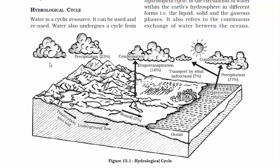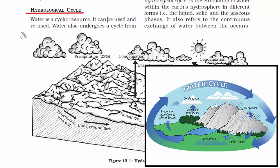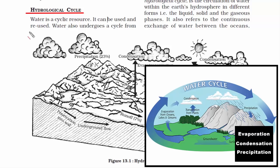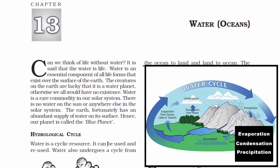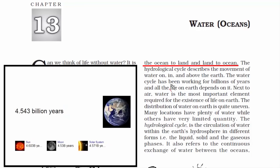We will now move ahead with the first topic: the hydrological cycle. This word is also known as the water cycle. It describes the continuous movement of water on, above, and below the surface of the Earth by the physical processes of evaporation, condensation, and precipitation. Basically, the same water is moving from the ocean to the land and back, forming a cycle — that is what is called the hydrological cycle.